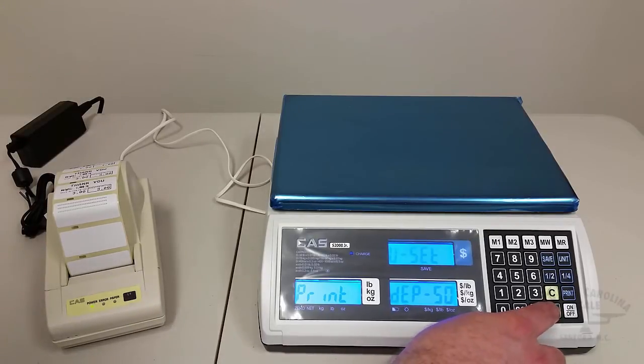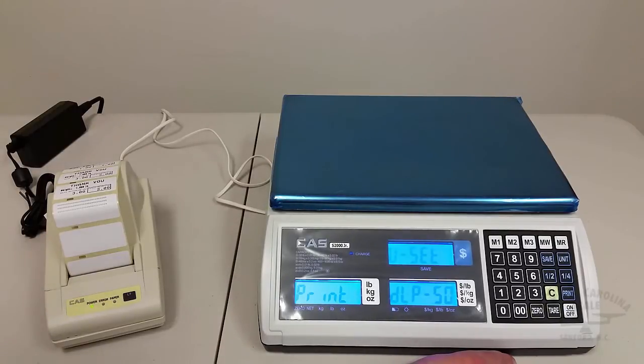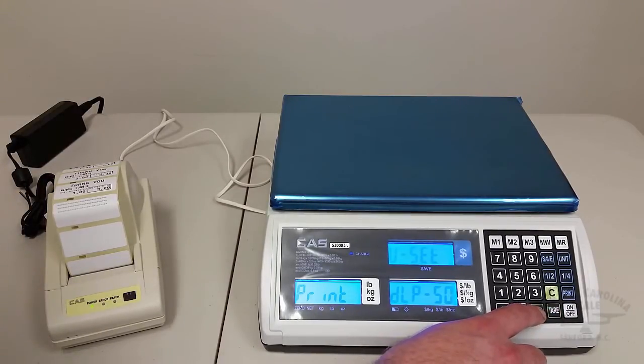So we press the tare button, and now we've got the printer that we need, the DLP50. We press the zero button, and that saves our setting.